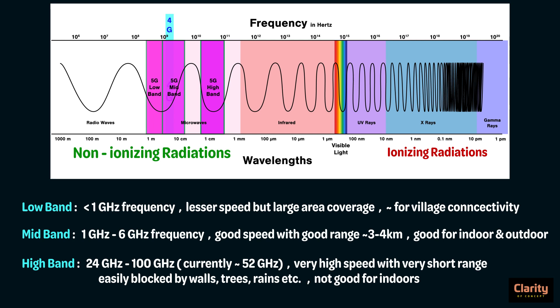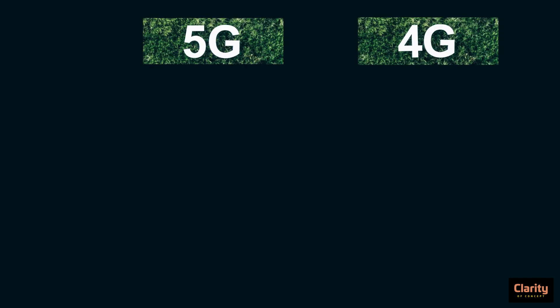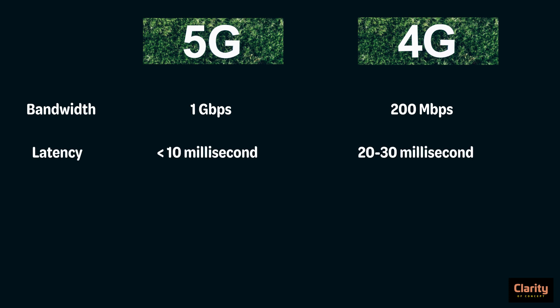Let us compare the speed and capacity of 5G. 5G has a bandwidth of 1 Gbps, while 4G had only 200 Mbps. So 5G has 5 times more. Also, the latency of 5G is less than 10 milliseconds.